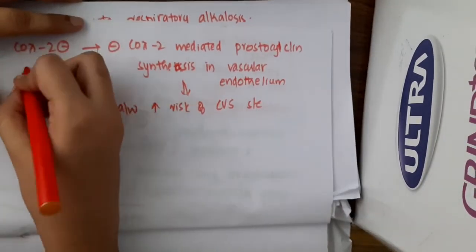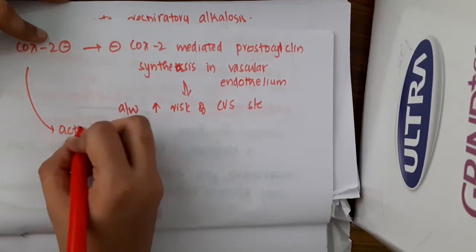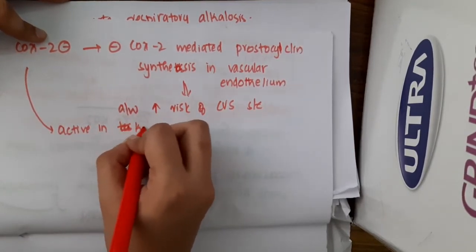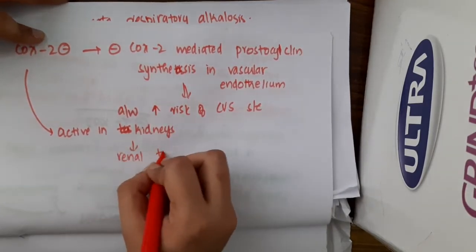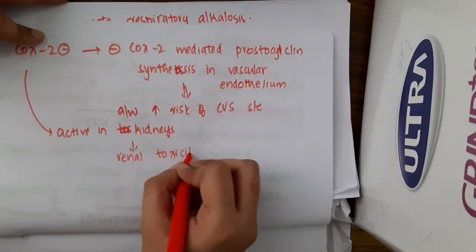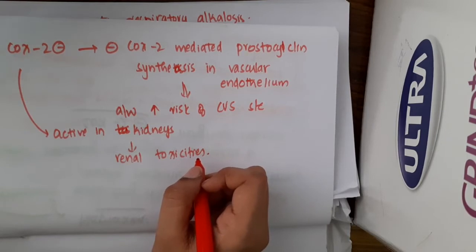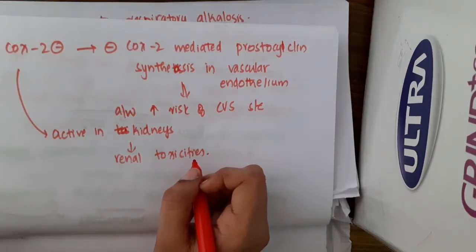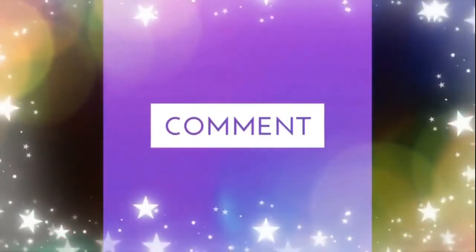COX-2 inhibitors are also active in the kidneys, and therefore they are associated with renal toxicities. We should reduce the dose when using them in renal failure. Thank you for watching.